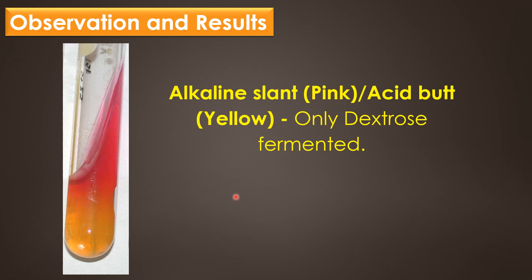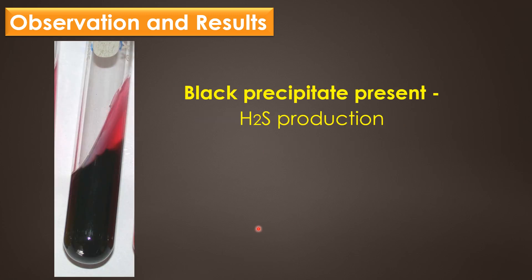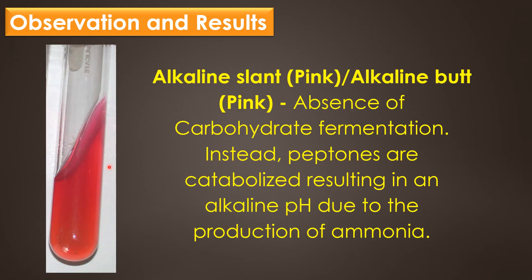This image shows alkaline slant and acid butt, indicating only dextrose fermented. This image shows black precipitate present, indicating hydrogen sulfide or H2S production. This image shows alkaline slant and alkaline butt, indicating absence of carbohydrate fermentation — instead, peptones are catabolized, resulting in an alkaline pH due to the production of ammonia.